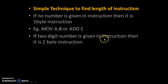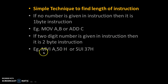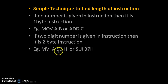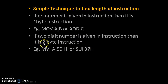If a 2-digit number is given in the instruction, then it is a 2-byte instruction. For example, MVI A,50H or SUI 37H. In these instructions, 50 is a 2-digit number and 37 is a 2-digit number, and if a 2-digit number is present in the instruction, then it is a 2-byte instruction.